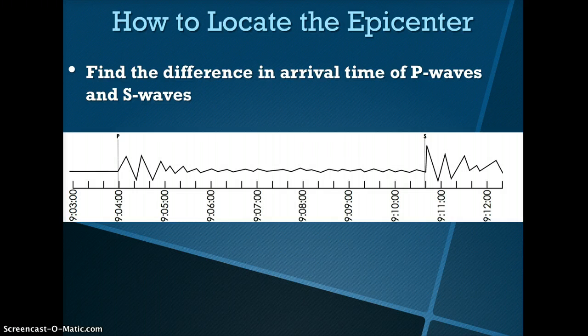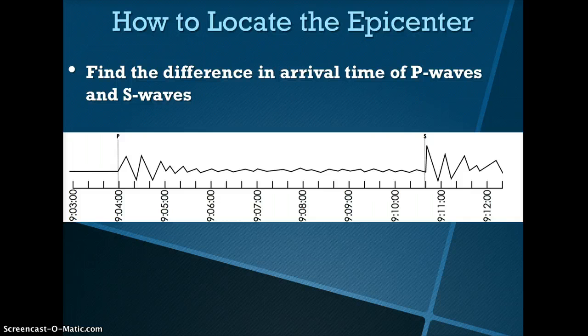Sometimes you may need to figure out the difference in arrival times by reading a seismogram. In this seismogram, P waves arrived at 9:03:59, and the S waves arrived at 9:10:39. Therefore, the difference in arrival times would be 6 minutes and 40 seconds.